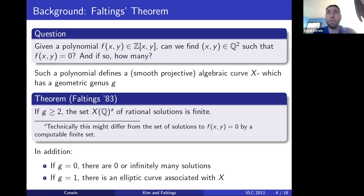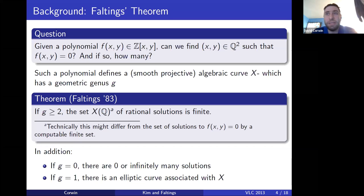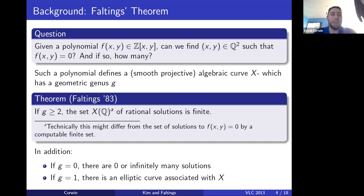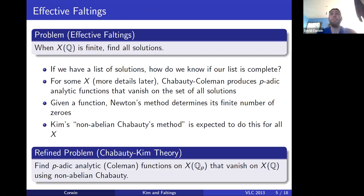If you're interested in the general question of determining the number of rational solutions to such a polynomial F(x,y), in the genus zero case there's either zero or infinitely many solutions, and there's an algorithm to figure out the answer. If g equals 1, it's either an elliptic curve or a torsor under an elliptic curve, and there are methods to deal with that, many of which relate to the Birch–Swinnerton-Dyer conjecture. My focus is the question of effective Faltings: when there are finitely many solutions, how do you find all of them?